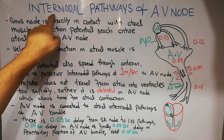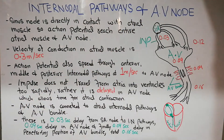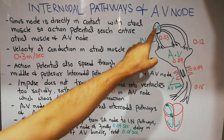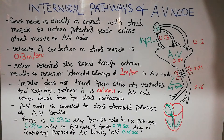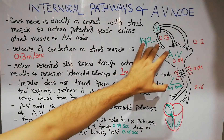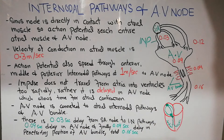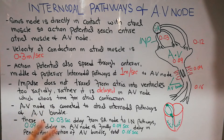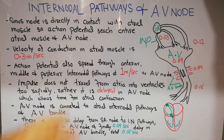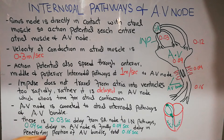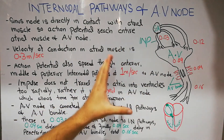In this lecture we are going to discuss the internodal pathways and AV node. In the last lecture we discussed the SA node, and we discussed that the excitatory system of the heart consists of the SA node, internodal pathways, AV node, AV bundle, and AV bundle branches. We also discussed in detail how the SA node acts as a pacemaker and how external influences can increase or decrease the heart rate.